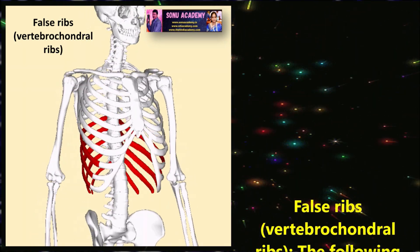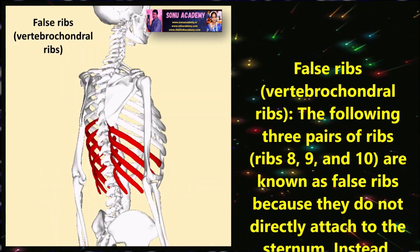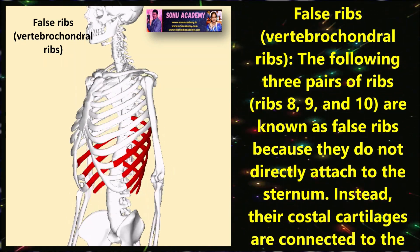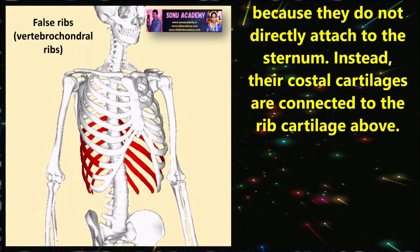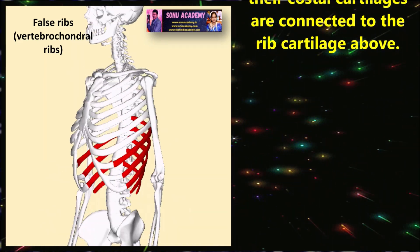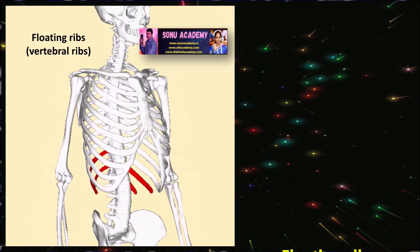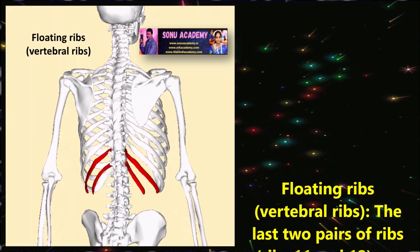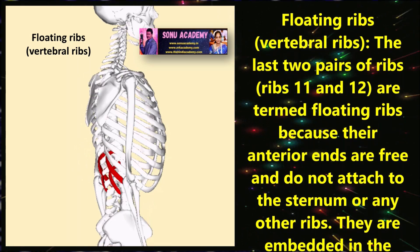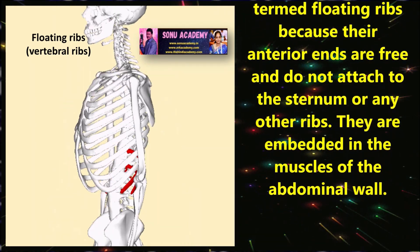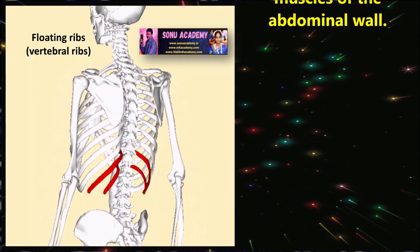The next category is false ribs, also called vertebrochondral ribs. The 8th, 9th, and 10th pairs of ribs are known as false ribs because they do not directly attach to the sternum. Instead, their costal cartilages are connected to the rib cartilage above. The last category is floating ribs. The last two pairs, the 11th and 12th, are termed floating ribs because their anterior ends are free and do not attach to the sternum or any other ribs. They are embedded in the muscles of the abdominal wall.